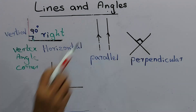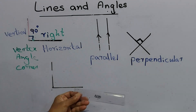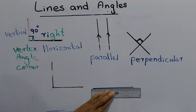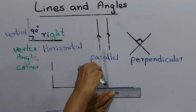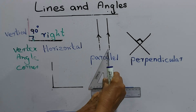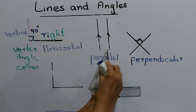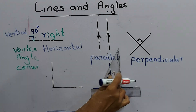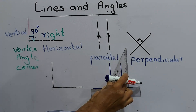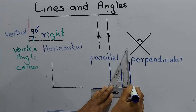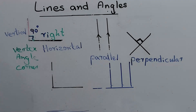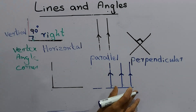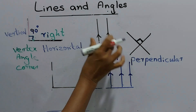I will explain how to draw parallel lines. You keep the ruler on the paper and draw a line. Then place the set square on the ruler and draw a line along the set square. Then slide the set square forward and draw another line. You can draw as many lines as you like. These three lines are parallel to each other — these are parallel lines.